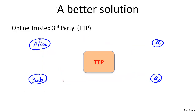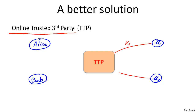The answer is yes, and one way to do that is what's called an online trusted third party — I'll use TTP to denote a trusted third party. Every user will now share a single key with this trusted third party. So user one will share a secret key, user two will share a secret key, and here are our friends Alice and Bob — let's call their secret keys K_A and K_B.